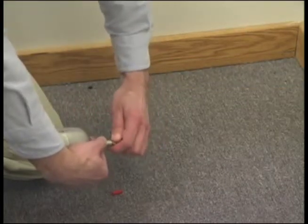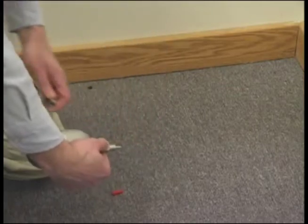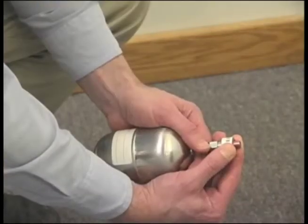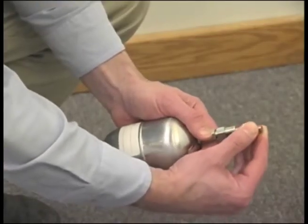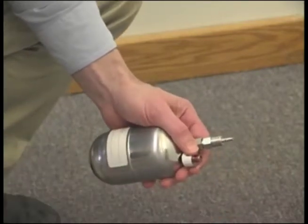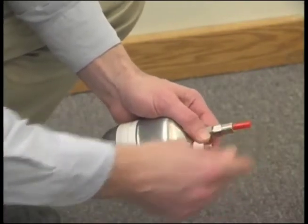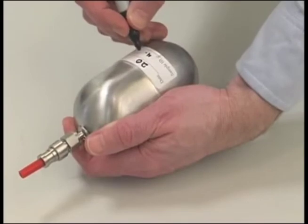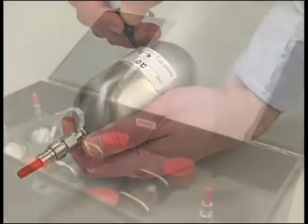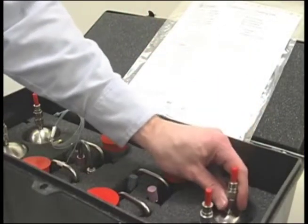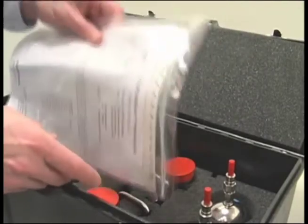When done, pull back the collar of the regulator and remove the regulator from the can. If using the regulator that does not attach, simply remove the regulator. Recap the inlet stem of the can and label the sample with your sample ID and date. Prepare the chain of custody and repack to ship back to Galson Laboratories.